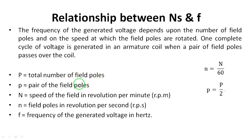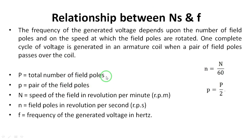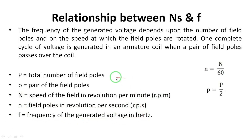The relation between synchronous speed and frequency uses these variables: Ns or capital N is the synchronous speed; F is the frequency in hertz; capital P is the number of field poles; small p is the pair of field poles (so if there are two poles, there is one pair); capital N is the speed in revolutions per minute (RPM); and small n is the speed in revolutions per second.